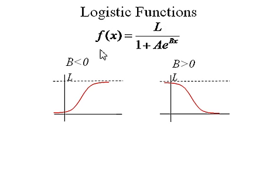So logistic functions have this form: f of x equals L over 1 plus A e to the Bx, where L, A, and B are constants.